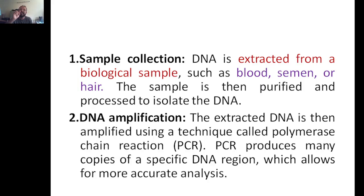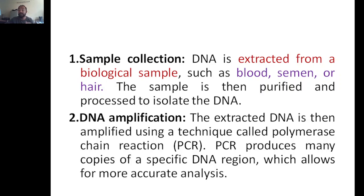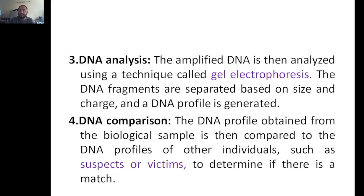At a crime scene we have only a small sample, but we need to run a lot of tests and need more samples. For that we use a device called PCR, which is Polymerase Chain Reaction, which gives you more copies - 2 to the power n per cycle. For example, one strand of DNA becomes two strands in the first step, four in the second step, and so on - 2 to the power n. I can make a separate video on how PCR works in detail. For this topic, this information is enough.